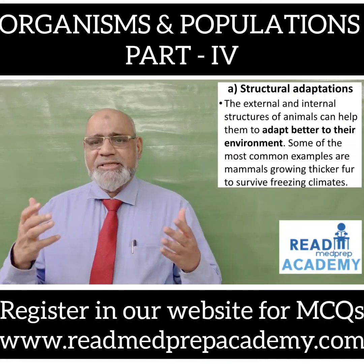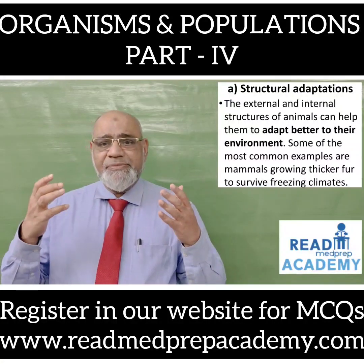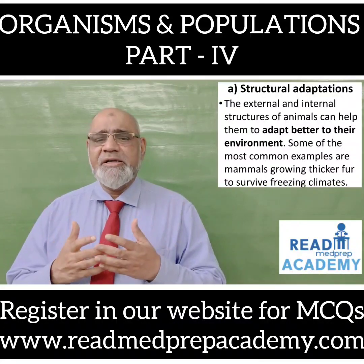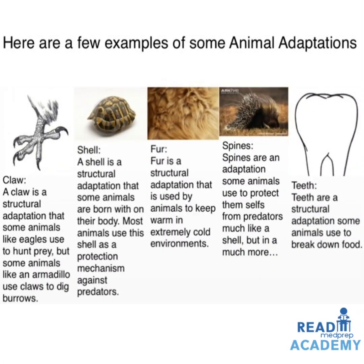Structural Adaptations: The external and internal structures of animals can help them adapt better to their environment. Some common examples include mammals growing thick fur to survive freezing climates. A claw is a structural adaptation — eagles use claws to hunt prey, while armadillos use claws to dig burrows. A shell is a structural adaptation animals are born with, used as protection against predators. Fur helps animals keep warm in extremely cold environments.